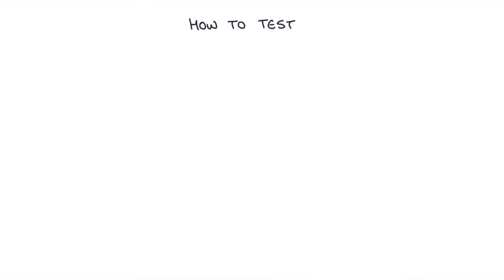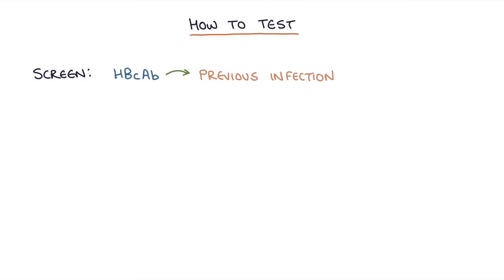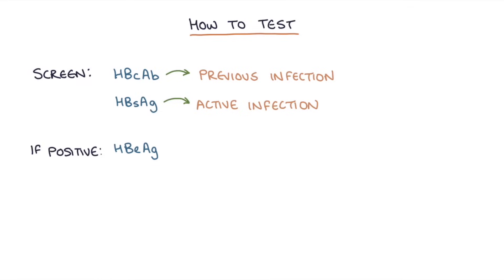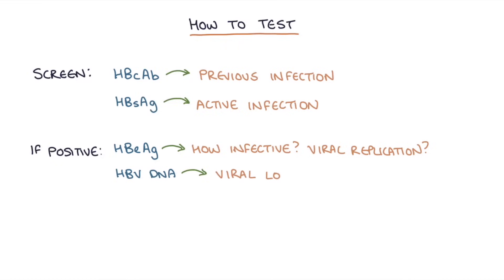When screening somebody you suspect may have hepatitis B, test for the hep B core antibody — which tests for a previous infection — and test for the hep B surface antigen for active infection. If these are positive, then test for the hep B E antigen to see how infective they are and how much viral replication is occurring, and then test for the hepatitis B DNA to look for the viral load and how many viral copies are in the bloodstream.